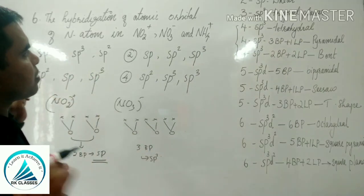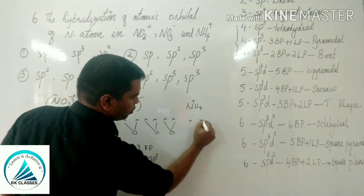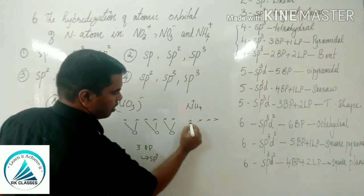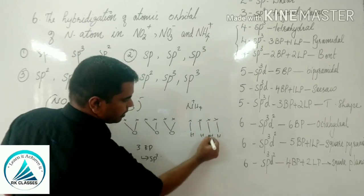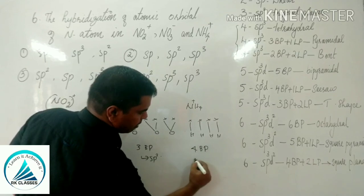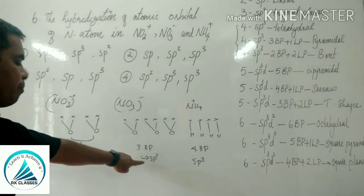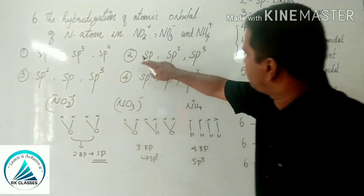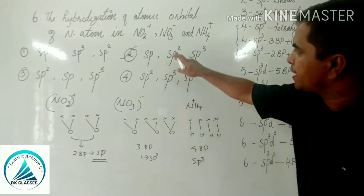For NH4 plus, nitrogen has 5 valence electrons. With a positive charge, we remove one — leaving 4. With 4 hydrogen atoms (monovalent), there are 4 bond pairs. Hybridization is sp3. Summary: 2 bond pairs → sp; 3 bond pairs → sp2; 4 bond pairs → sp3. So the answers are sp, sp2, sp3.